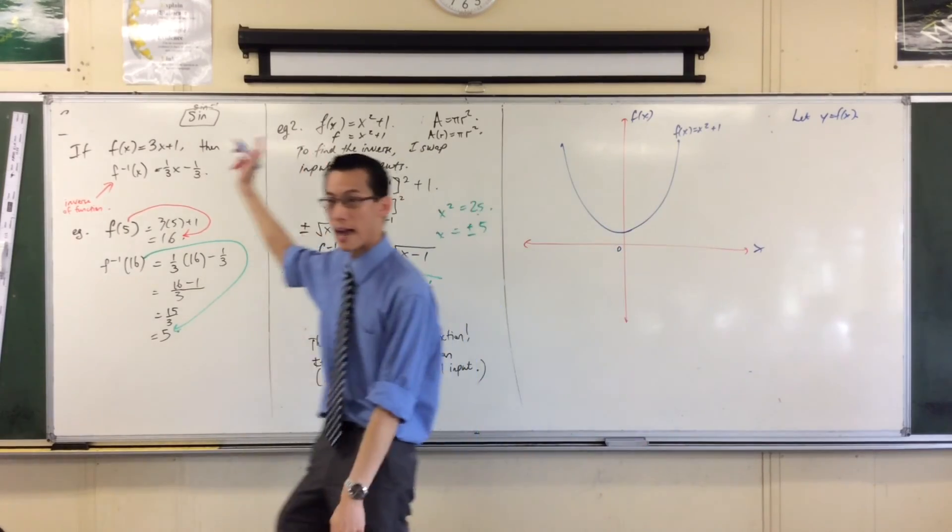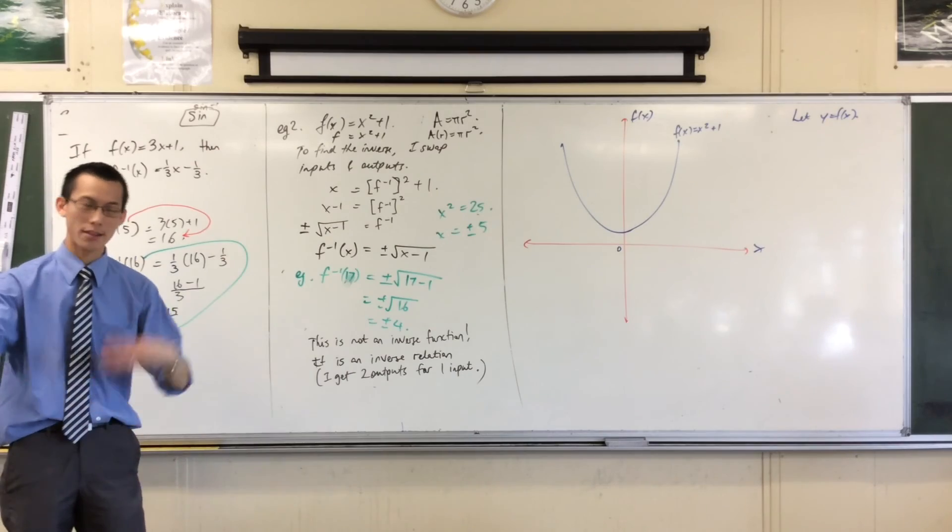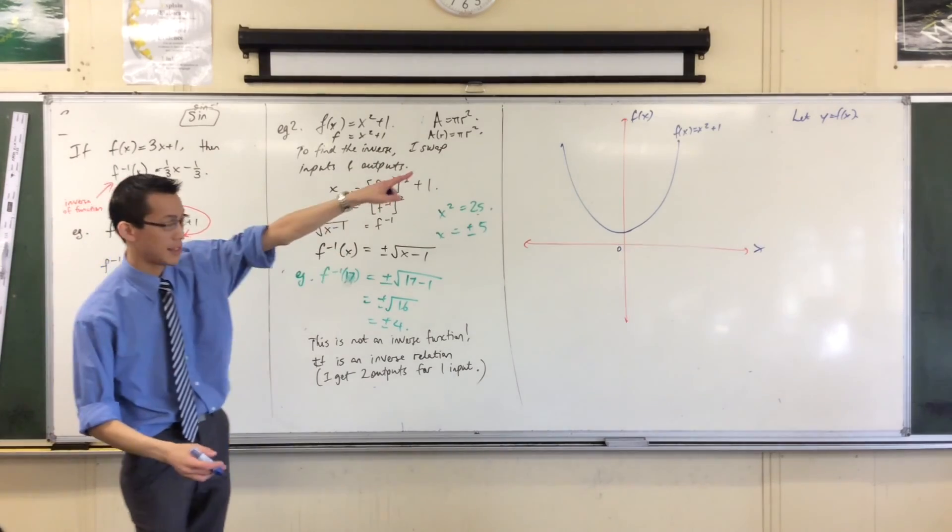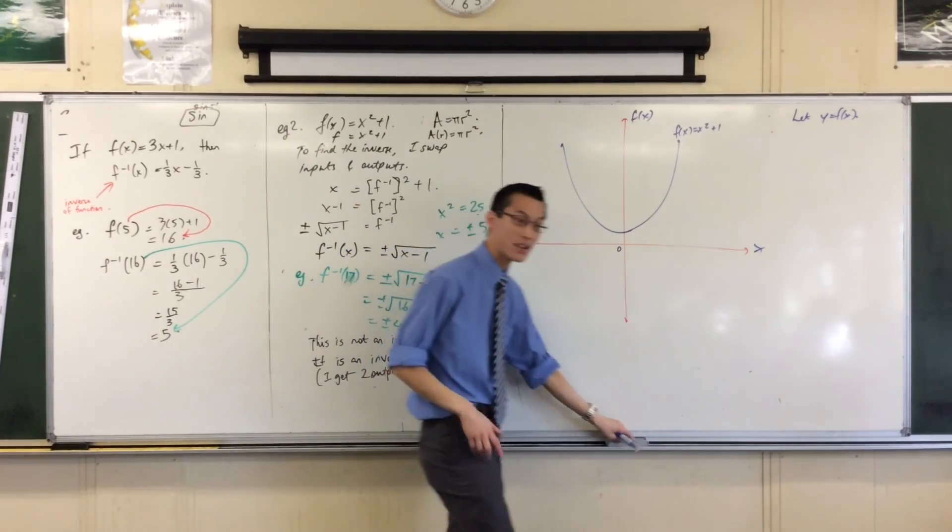And then they'll tell you what f of x is just like I have. In which case, if you want, you can label that thing y because y and f of x, they're exactly the same. That's what that line means. But in this case, I have no y's so I'm going to steer clear of them.